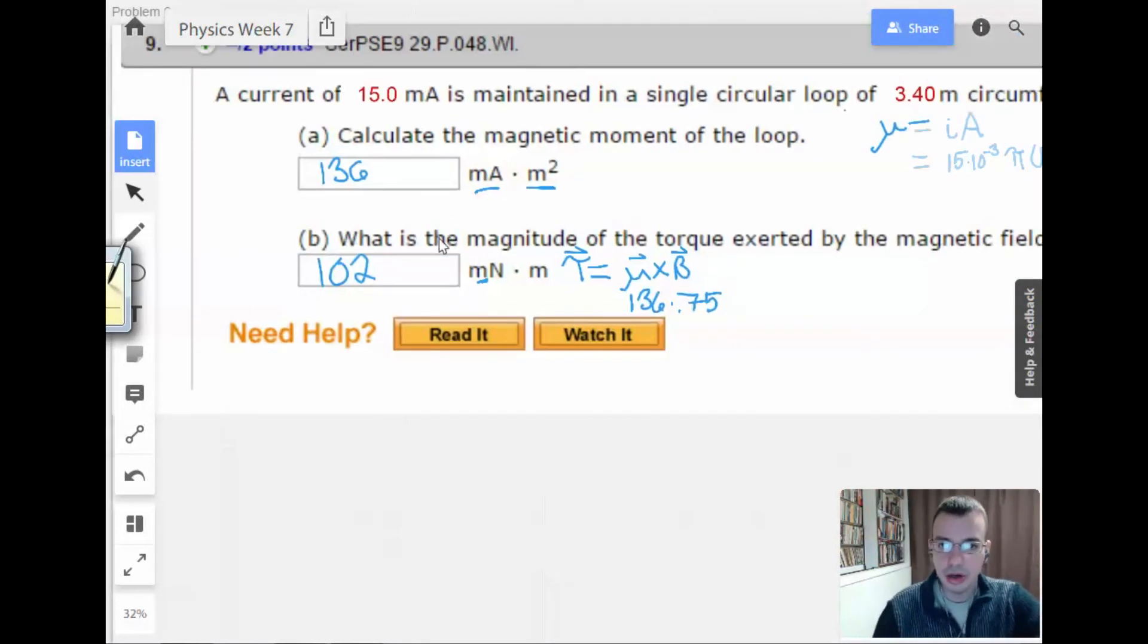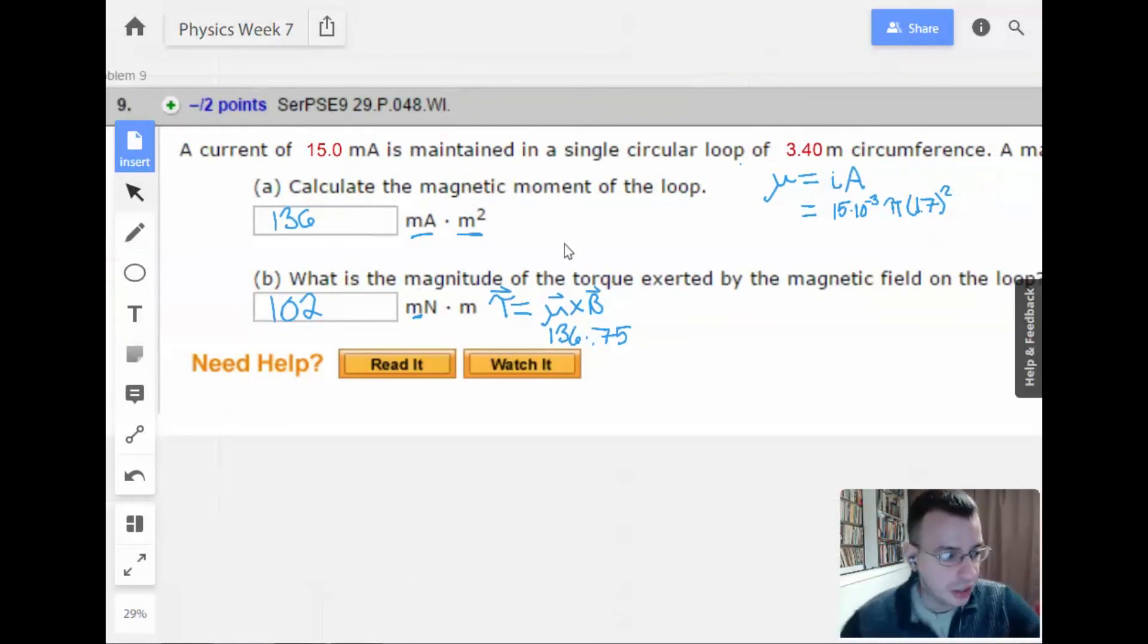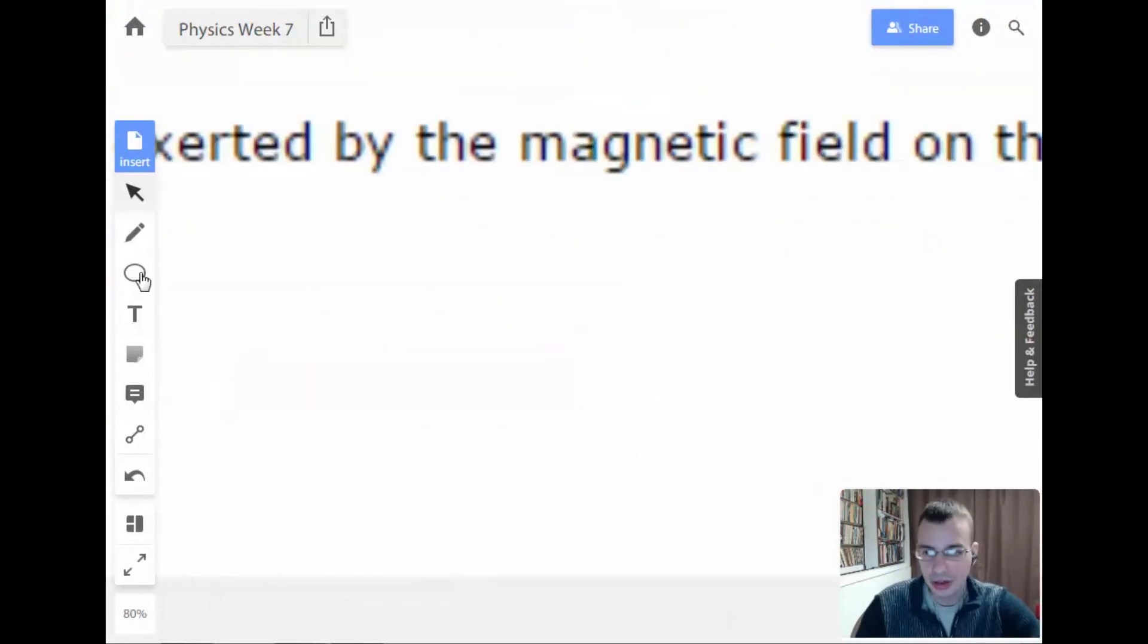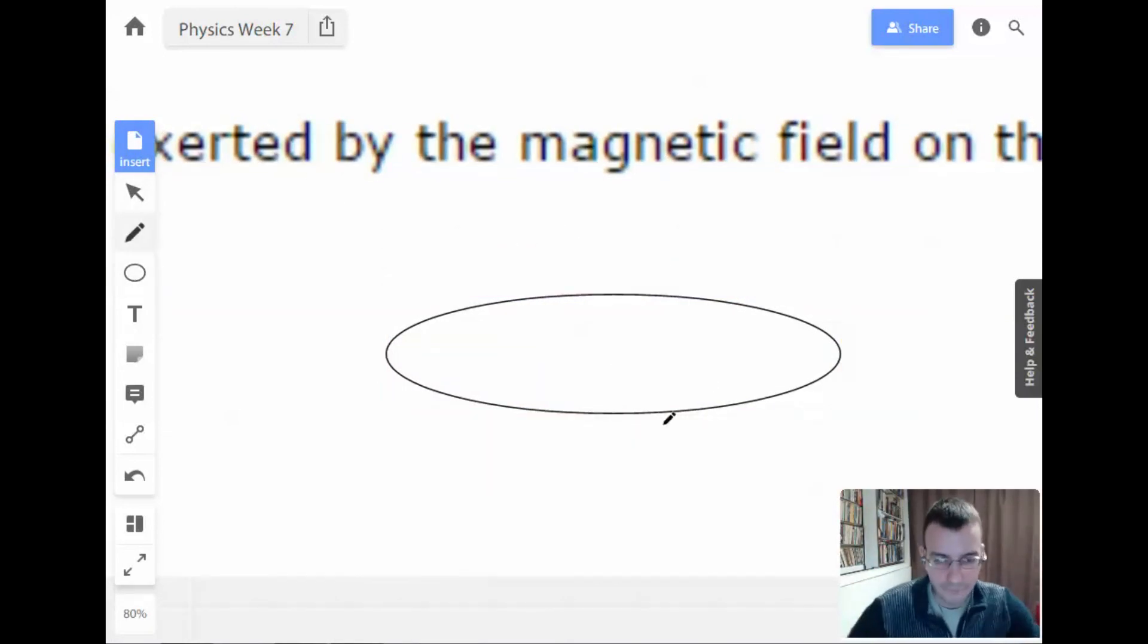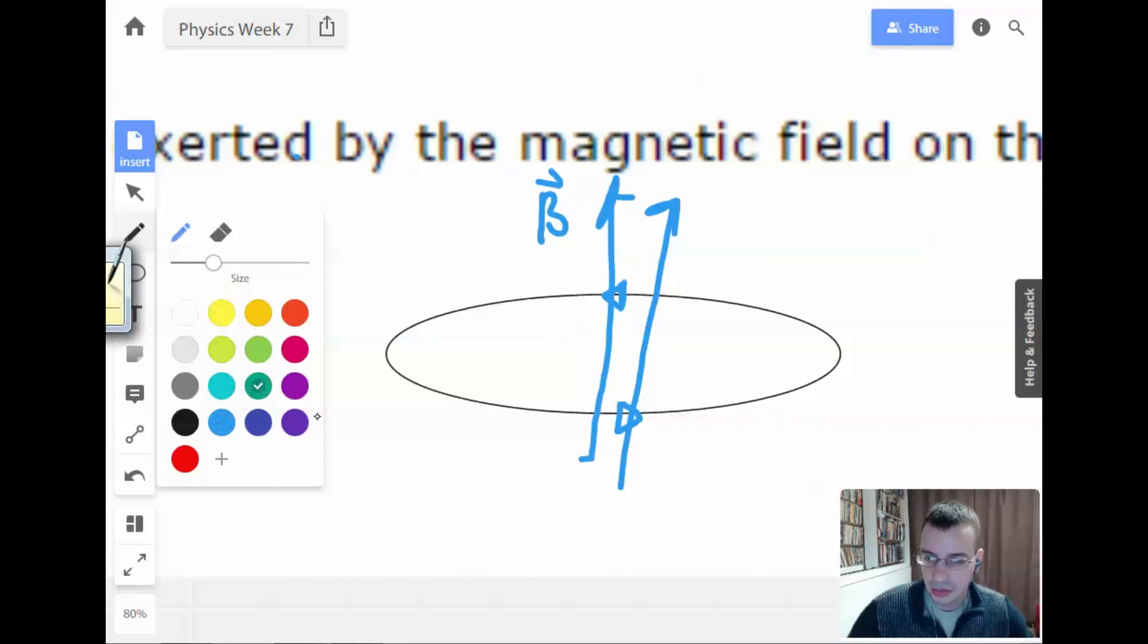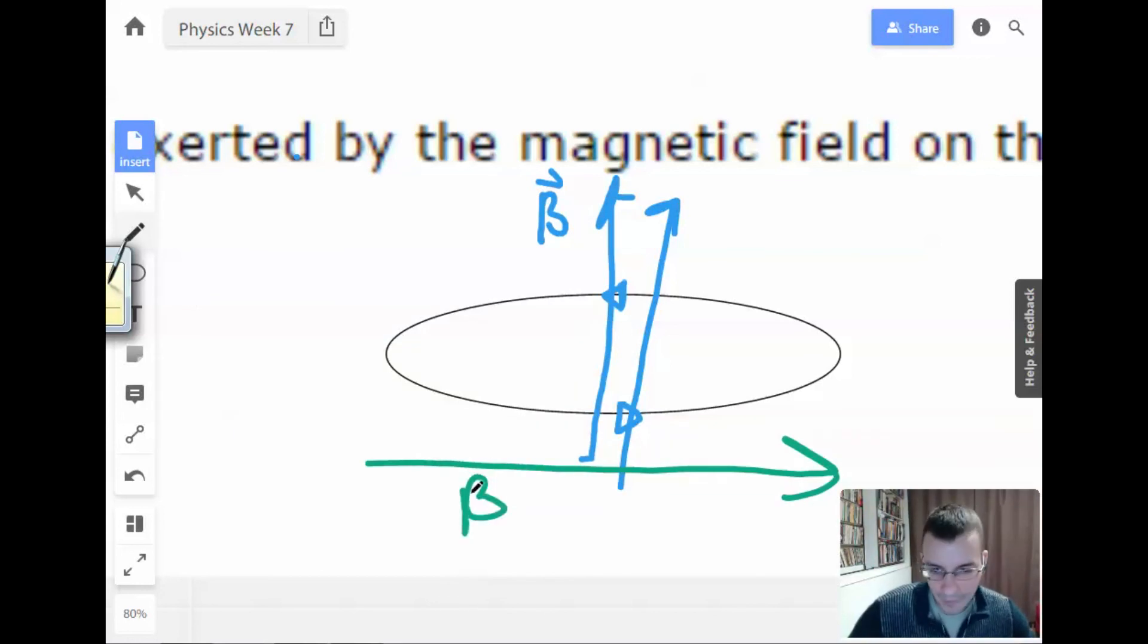So on a more conceptual level here, what they're saying is you have a loop. I'm going to draw this. I have a loop. Circle. There we go. With a current in it. What that's doing is creating a magnetic field. It's actually up and down. Then we have another magnetic field. I'm going to say magnetic field in green, going this way.